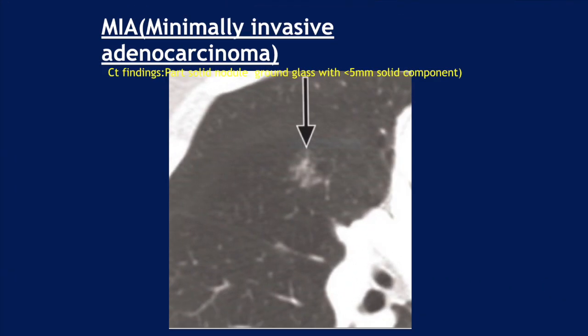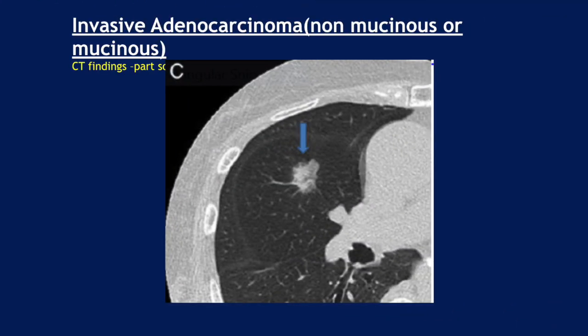MIA (minimally invasive adenocarcinoma) shows CT findings of a part-solid nodule — ground glass with less than 5 millimeters of solid component. Finally, invasive adenocarcinoma, non-mucinous or mucinous type, presents as a part-solid nodule with a solid component greater than or equal to 5 millimeters, or as a solid nodule.